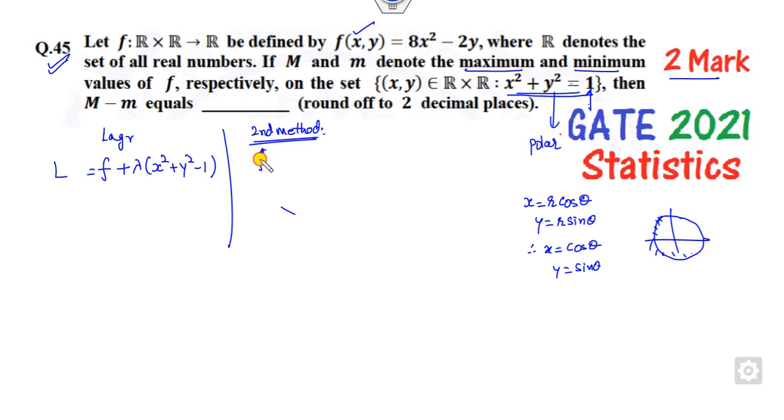Then your objective function will be 8cos²θ - 2sin θ. Now you can find the maximum or minimum value of this function. You can take the first derivative as zero. What is the first derivative? 16cos θ sin θ - 2cos θ = 0.